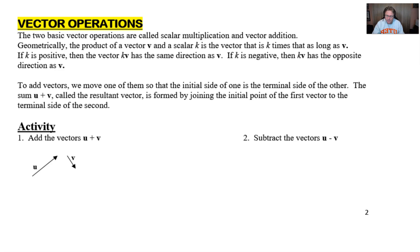To add vectors, we simply move one of them so that the initial side of one is the terminal side of the other. Maybe you've referred to this as the tip to tail method. The sum u plus v, called the resultant vector, is very commonly used in some story and application problems. It's formed by joining the initial point of the first vector to the terminal side of the second. So let's take a look and see how this actually works here in this activity.